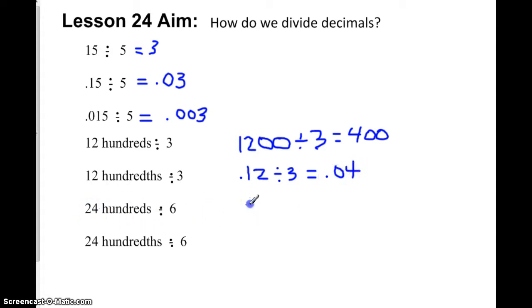24 hundredths is 24 hundredths divided by 6, which equals, well, I know 24 divided by 6 is 4 hundredths.